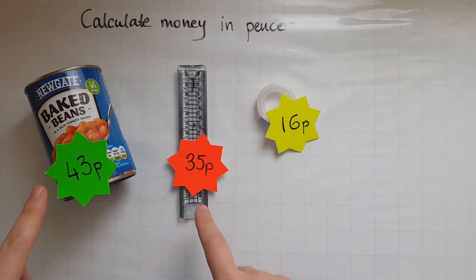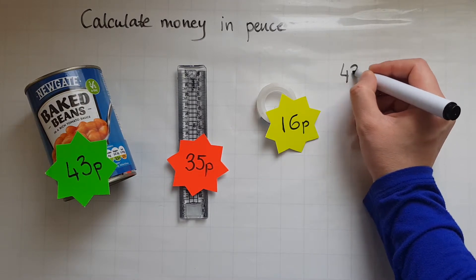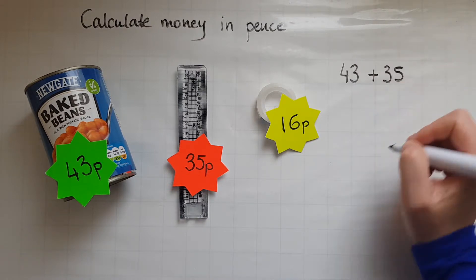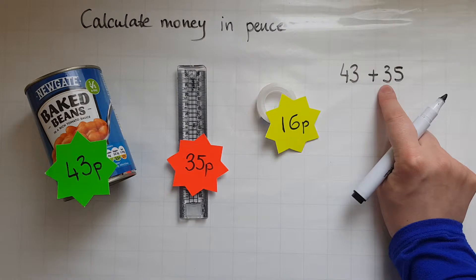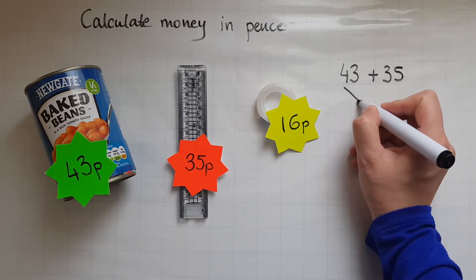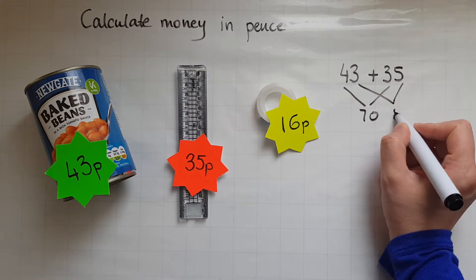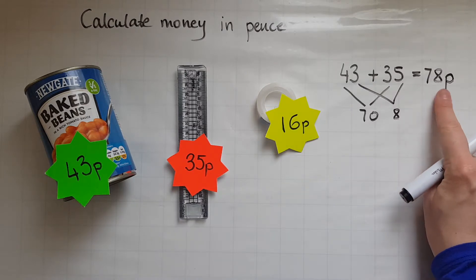I want to find out how much these two will cost. So we've got 43 pence and 35 pence. Now the method I'll use here is by adding 40 and 30 first which makes 70, and 3 and 5 which makes 8. So you could do this in your head as well. 70 and 8 gives me 78 pence. I need to write what it is. Is it pence? Is it pounds? So I've got to write the unit there.